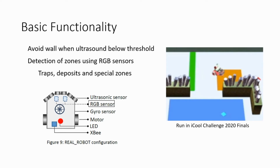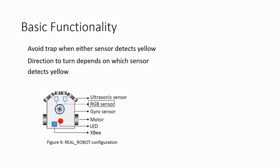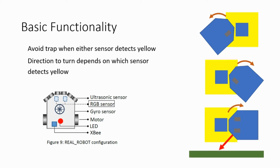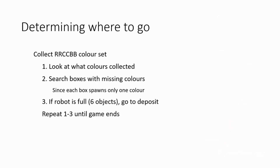To deposit the objects, both RGB sensors must be within the orange deposit zone. If only one sensor detects orange, the robot will turn until both sensors are within the orange zone. The RGB sensors are also used to detect the blue special zone and the yellow trap warning zones. The robot steers to avoid the trap whenever one RGB sensor detects yellow. If the right sensor detects yellow, it steers left, and vice versa. When both sensors detect yellow, the direction to steer depends on which side of the robot is closer to the wall.